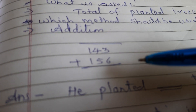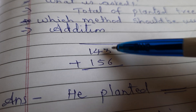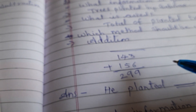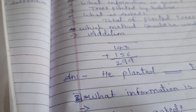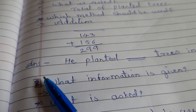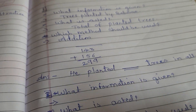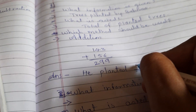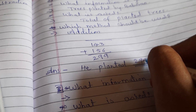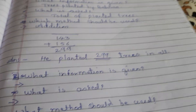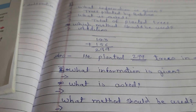Let's go through it: 3 plus 6 is 9; 4 plus 5 is 9; 1 plus 1 is 2. So the total is 299. We have to write the answer: he planted 299 trees in all.